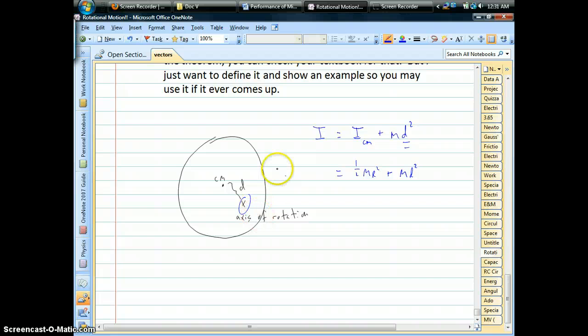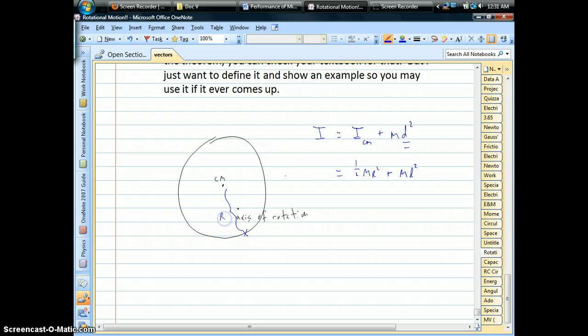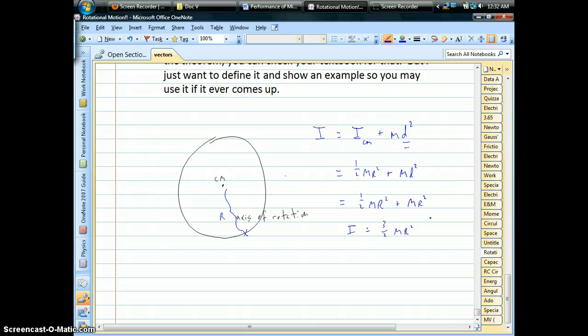If the axis of rotation, let's say, happened to be instead of in the body of the disc, what if it happened to be at the edge of the disc? Okay, so now the distance from the center of mass to that new point would be the radius of the disc. And so all of a sudden, you'd have one-half mr squared, which is the moment of inertia around the center of mass, plus the mass of the disc times that distance squared, which is r squared. So now you're talking about three-halves mr squared. You don't have to do any integration. You don't have to do anything difficult. It's just this extra term that we're adding on.